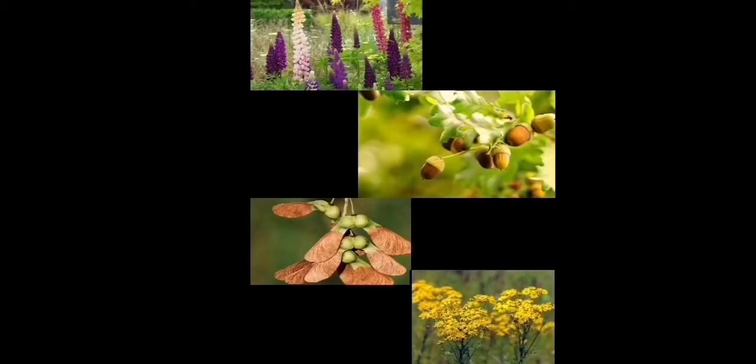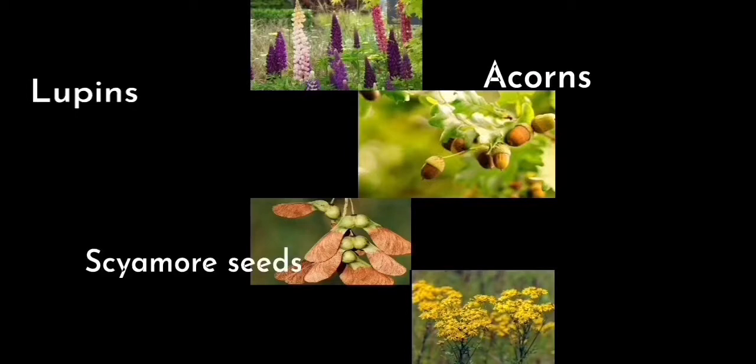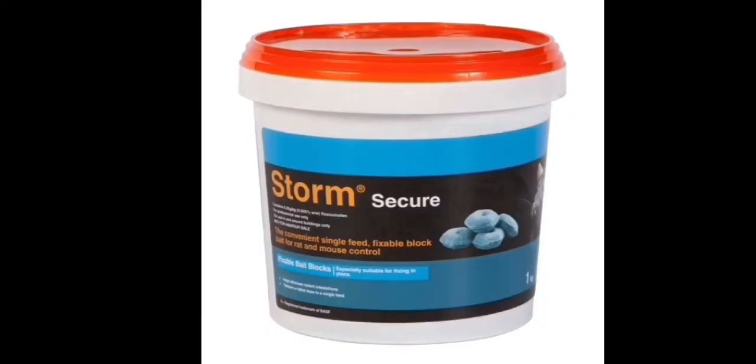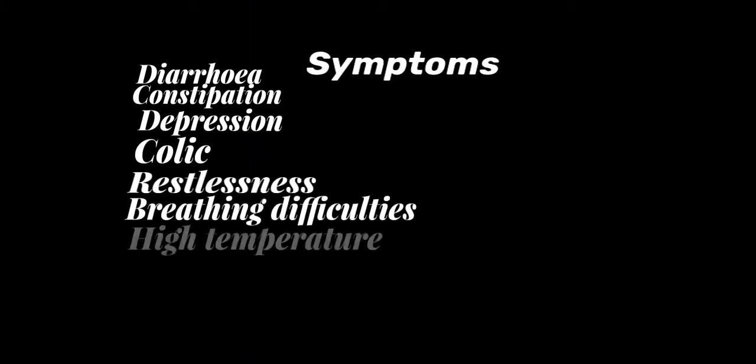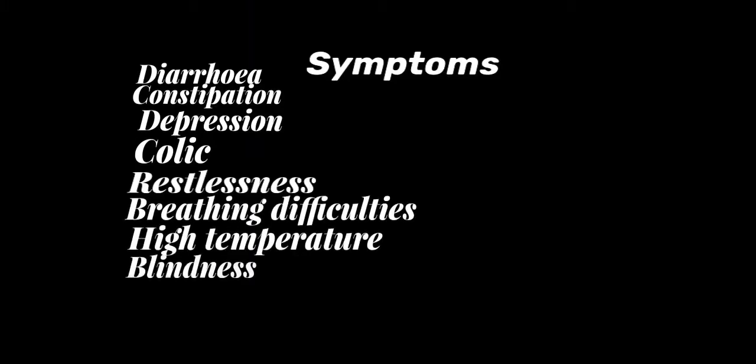Number four: poison. There are many different ways your horse can be poisoned — this could be from plants such as lupins, acorns, sycamore seeds, and the most well-known one, ragwort. They could also be poisoned from human sources, for example rat poison left lying around, or medically such as from blood poisoning. Symptoms of a poisoned horse include diarrhea, constipation, depression, colic, restlessness, breathing difficulties, high temperature, blindness, collapse, tremors, and loss of appetite.